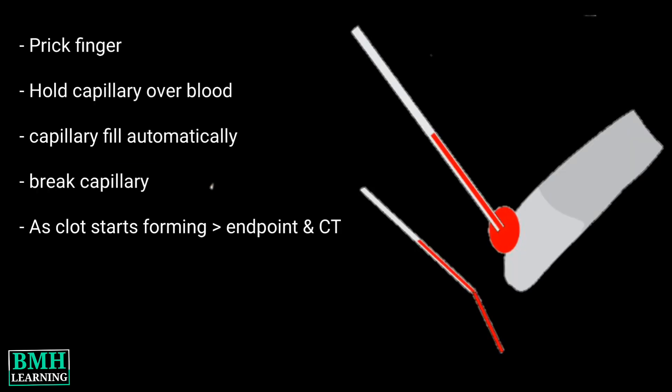There are various methods for clotting time estimation. The first is the capillary method: prick the finger with a lancet, hold the capillary over the blood, and the capillary will fill automatically. Then, at regular intervals, break the capillary. When a clot starts forming, that is the end point.